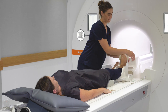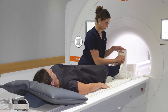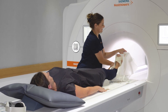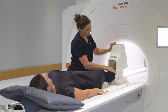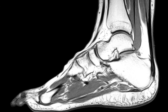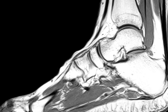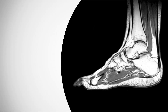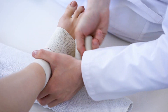Diagnosing foot and ankle injuries can be challenging due to its complex three-dimensional anatomy. This is why magnetic resonance imaging, or MRI, is often recommended. MRI uses strong magnetic fields to generate clear images of the foot and ankle. It can identify soft tissue, bone marrow, and fractures that are not evident with other imaging modalities.